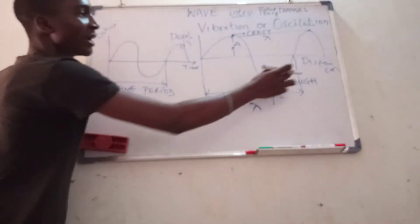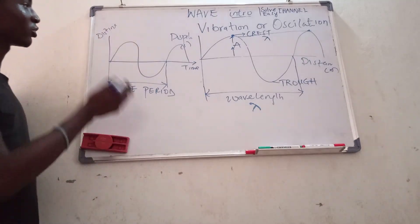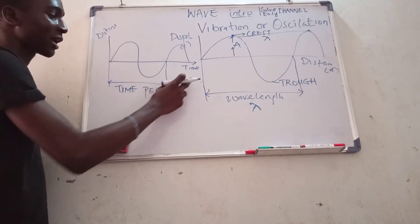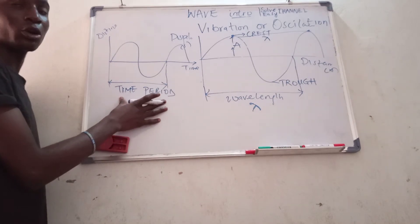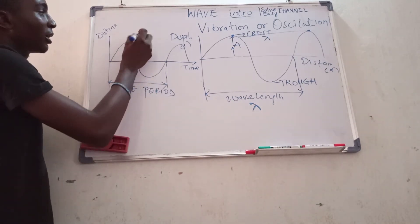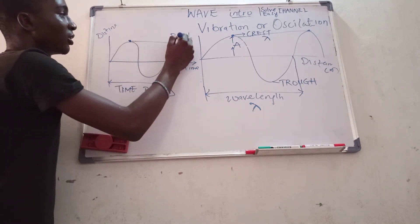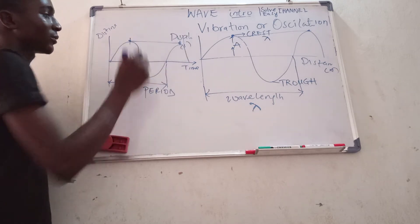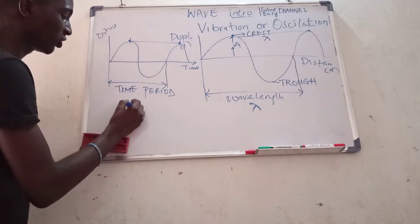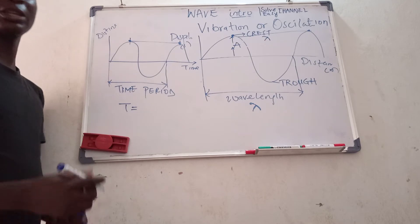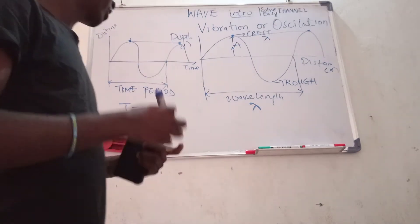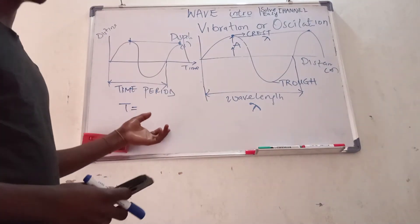But this is a displacement-distance graph, so I'll write my wavelength. On the displacement-time graph, this is always your period, or from one crest to another crest. So the period T is the time taken to complete a wave or a successful oscillation.